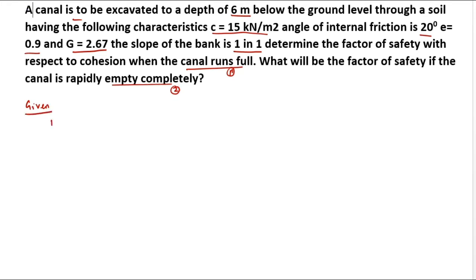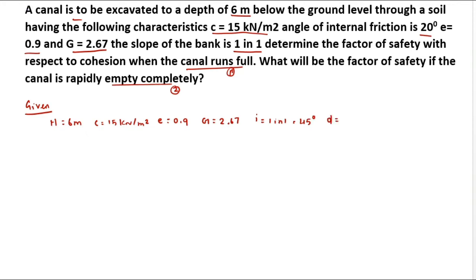Writing the given values: depth h equals 6 meters, cohesion c equals 15 kilo Newton per meter square, void ratio e equals 0.9, specific gravity G equals 2.67, slope i equals 1 in 1 which is 45 degrees, and angle of internal friction φ equals 20 degrees. We need to calculate the factor of safety FOS for both conditions.